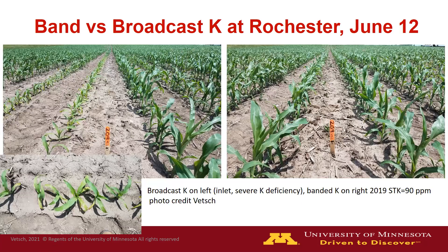This is band versus broadcast K at Rochester, taken on June 12th. On the left, we have the broadcast with the inset showing severe K deficiency. This four-row plot was interesting — row two looked very poor, as did part of row one, but then it got better, while another row also showed K deficiency. The band treatment on the right was not great overall, but definitely more consistent and had minimal to no K deficiency symptoms compared to the broadcast treatment on the left.